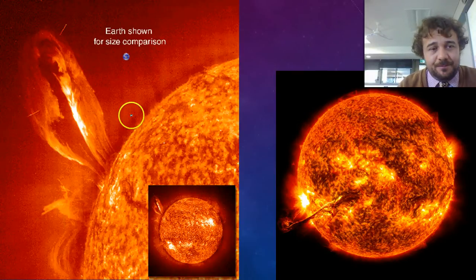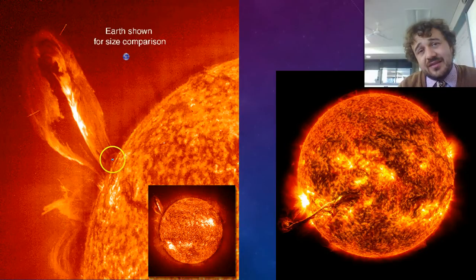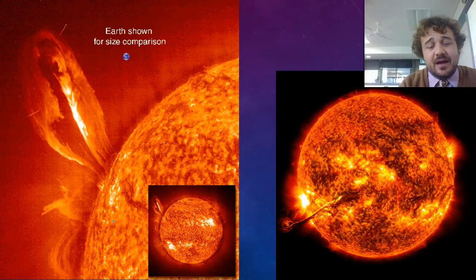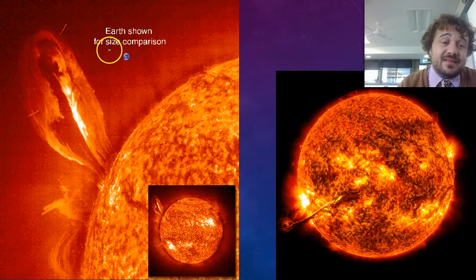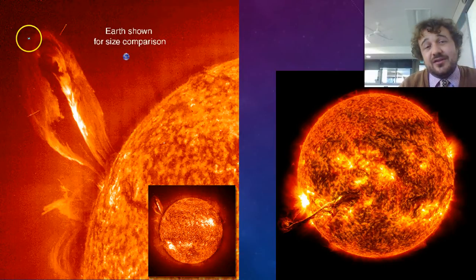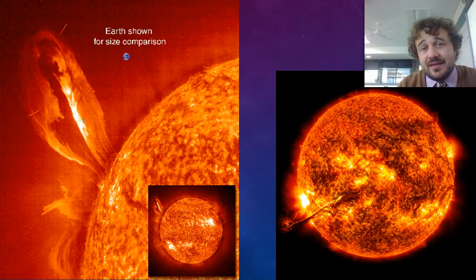For example, this is what we call a coronal mass ejection. You don't really need to know that term — you just need to know that every now and then, because of the magnetic field, giant bands of matter get spewed out from within the Sun. And to show you how big it is, that's the Earth right there. Obviously it's further away — if we were that close we'd be dead — but that's how big this ejection is, just compared to the Earth.